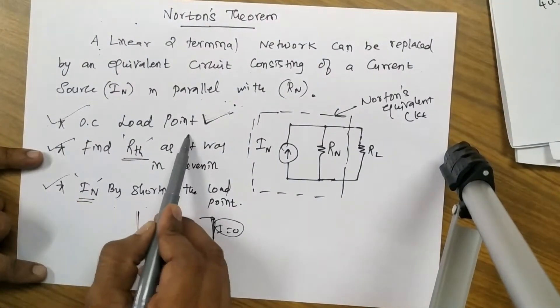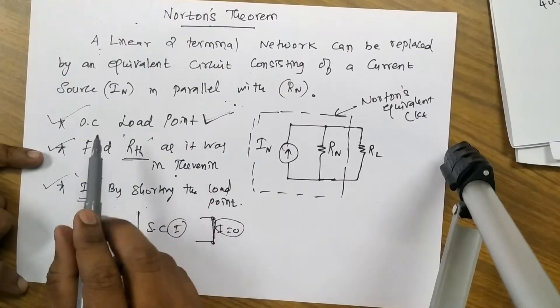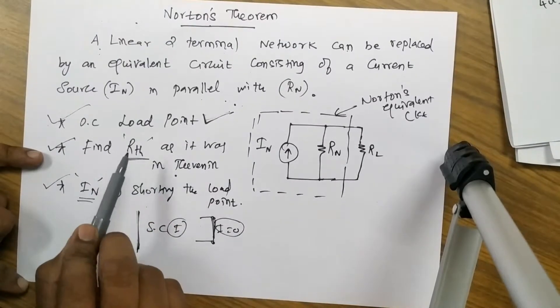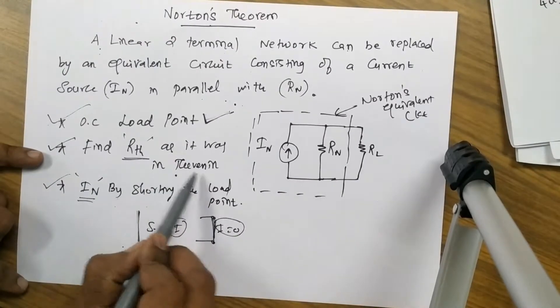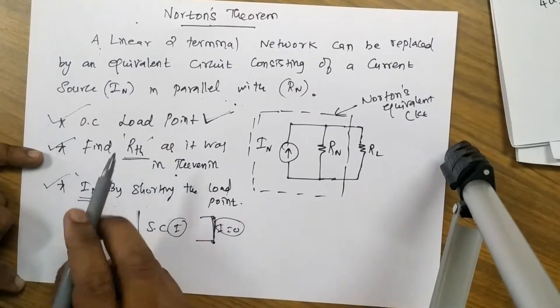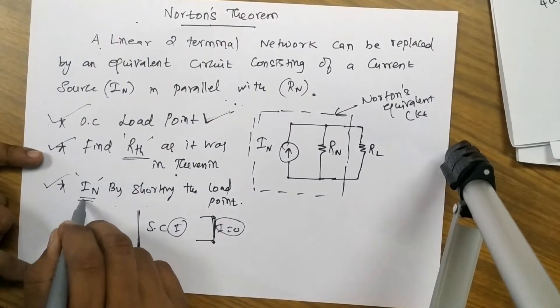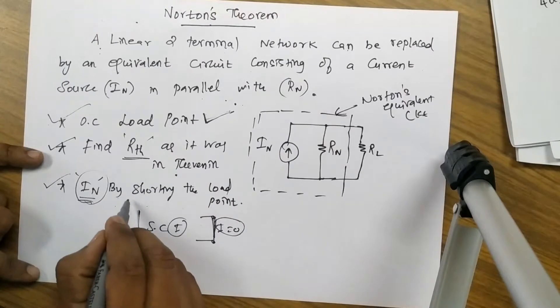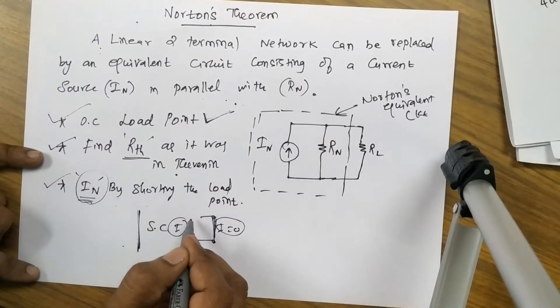First thing is we want to open circuit the load point as usual. Second thing, we want to find out what is Rth as what we did in the V Thevenin.